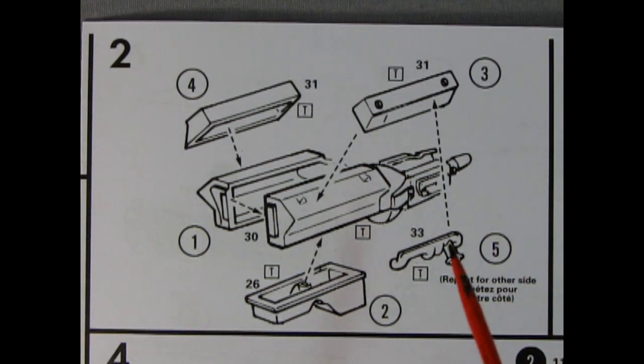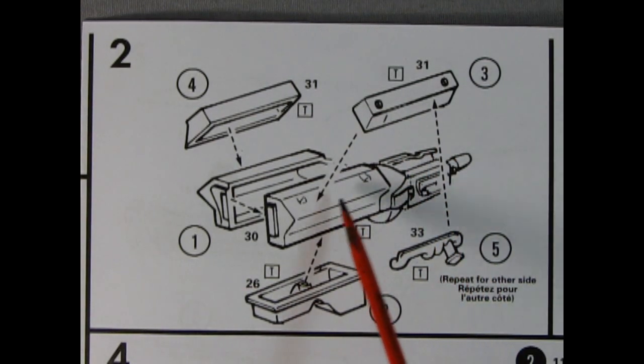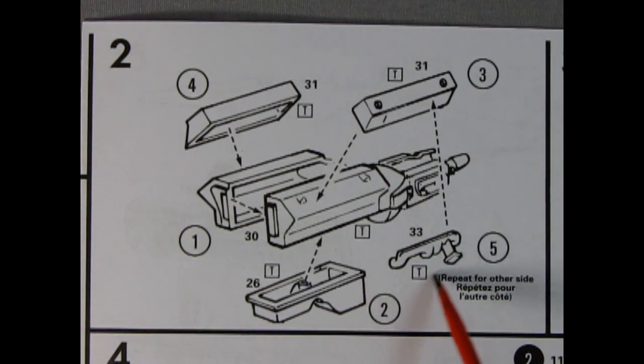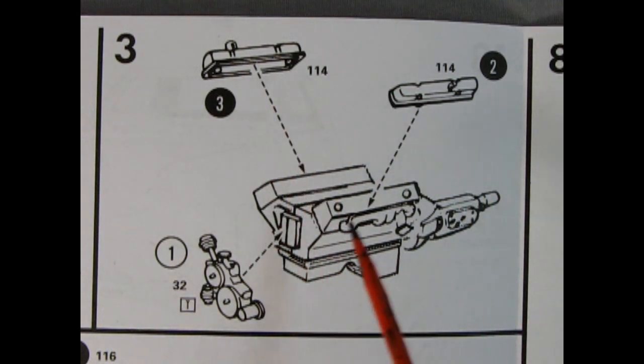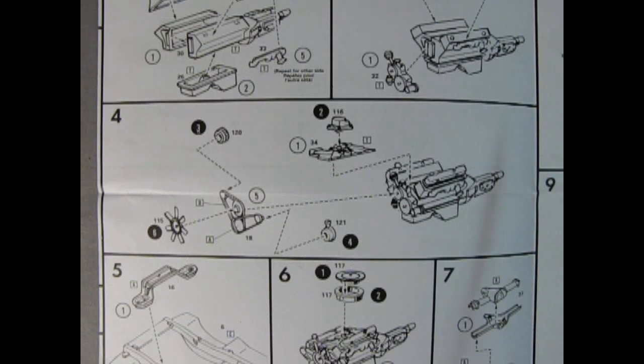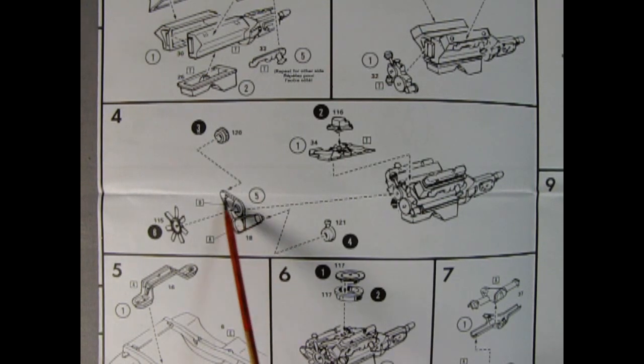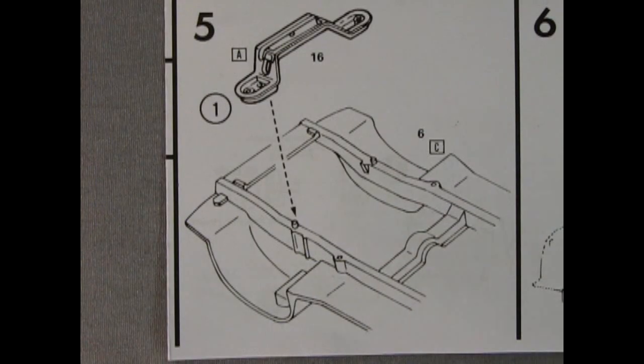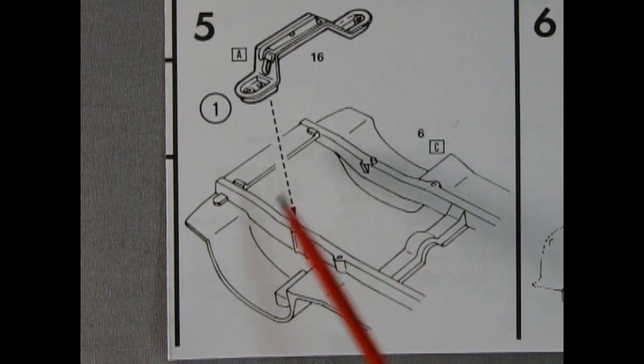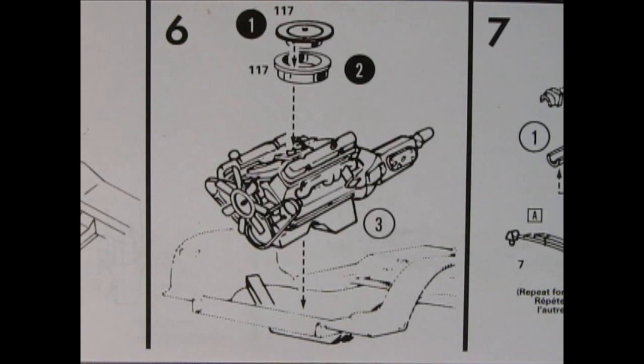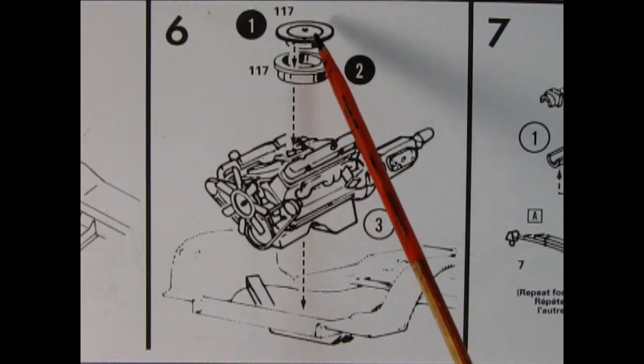Panel two shows our engine block going together. You got your right and left hand side of the engine block as well as the transmission molded on the back. Here we've got our cylinder heads, the oil pan, and exhaust manifolds. We've got valve covers being glued in place as well as the front cover with the oil filler and fuel pump. Panel four shows the intake manifold being glued on top the block as well as the carburetor, power steering pump, fan belts and pulleys, alternator and the fan. I do believe this motor is either a Dodge 318 or a Dodge 360 but doesn't really say on the instruction sheet.